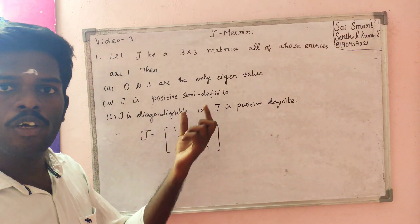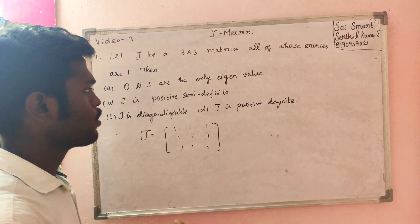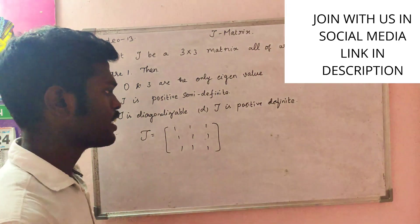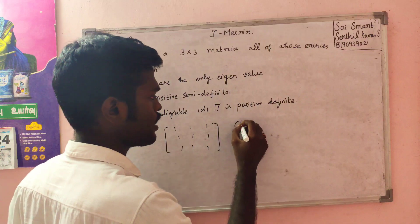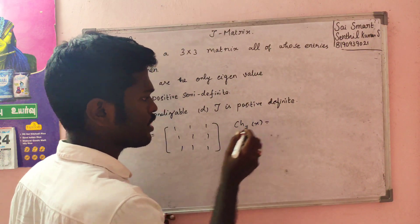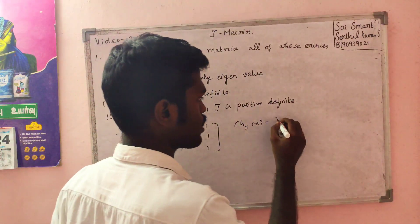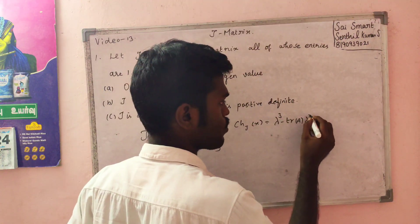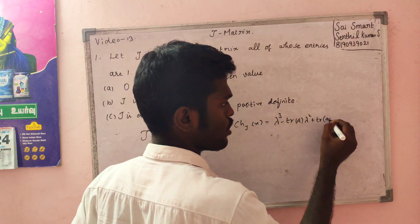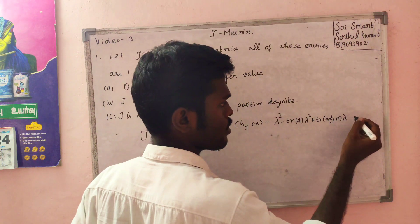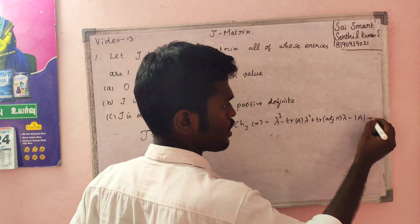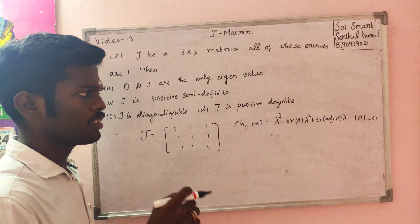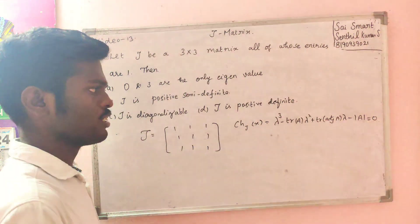You can see the characteristic polynomial. The characteristic polynomial for a 3×3 matrix in general form is: lambda cubed minus trace of A times lambda squared, plus trace of adjoint of A times lambda, minus determinant of A equals 0. This is the characteristic equation.